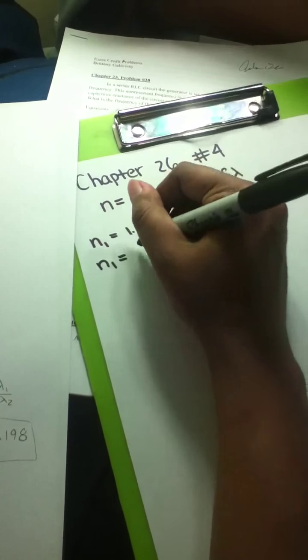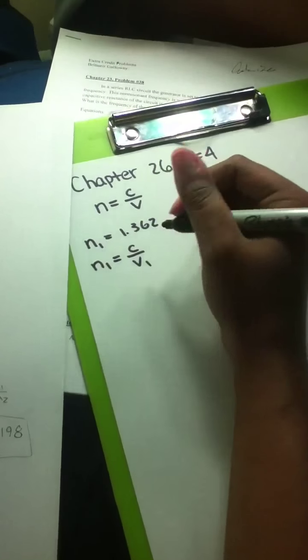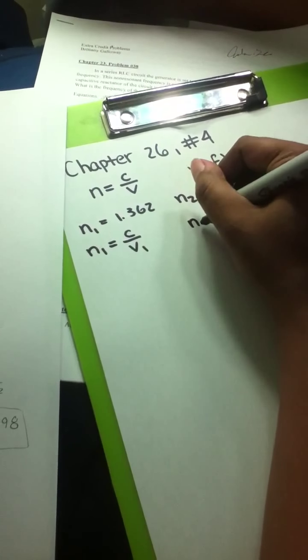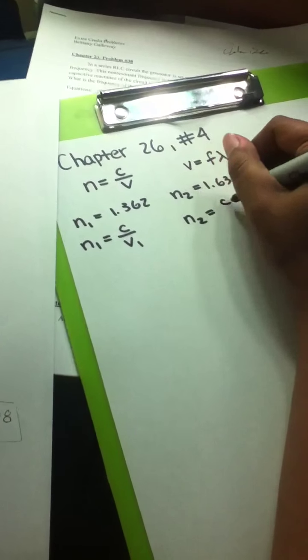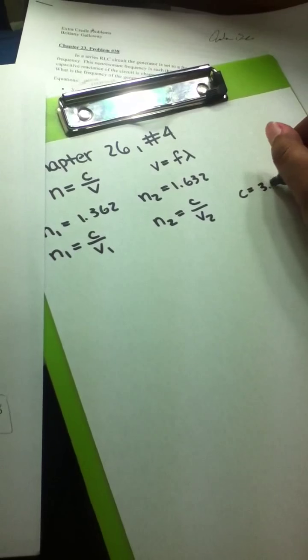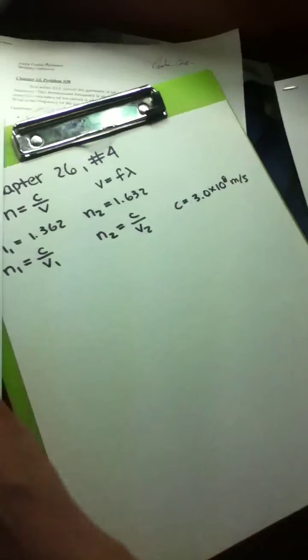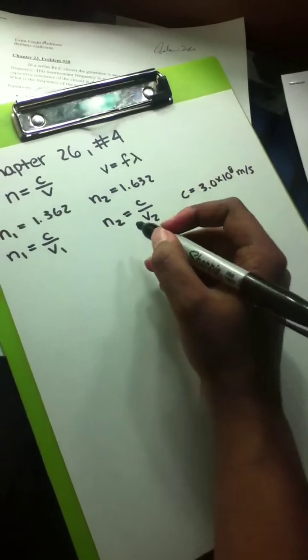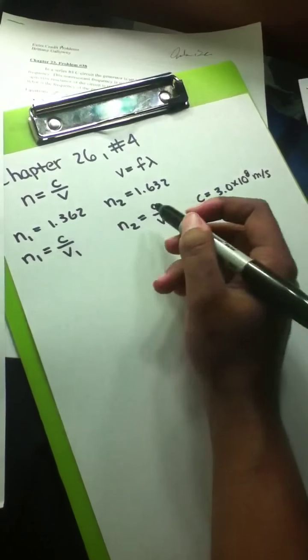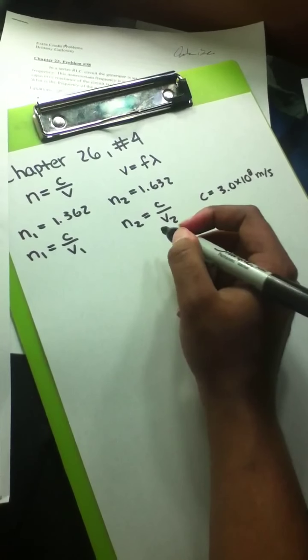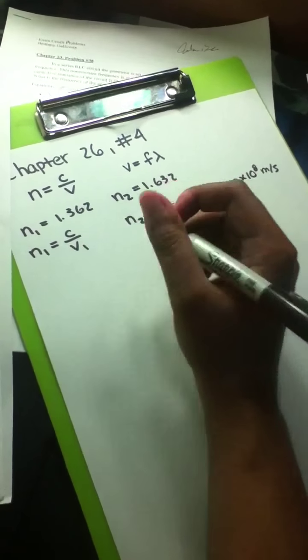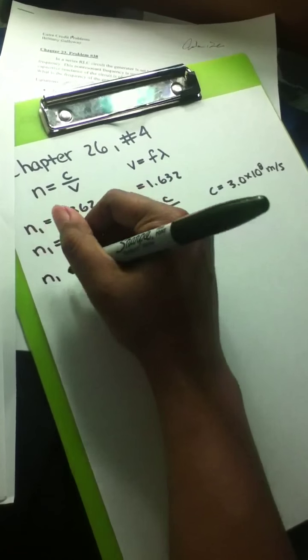We're going to start by writing two equations using the index of refraction formula. We know that N1 is equal to C over V1, and N2 is equal to C over V2. The C in both equations is the speed of light, which is 3.0 times 10 to the eighth meters per second. Since these two C's are the same, we can set these two equations equal to one another by getting C on the same side, with a little algebra.